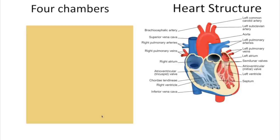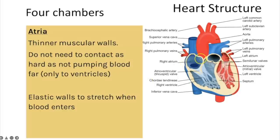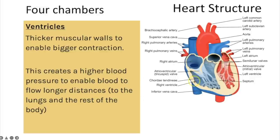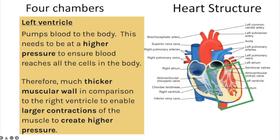Key heart structures: there are four chambers — two atria at the top and two ventricles at the bottom. The atria have thinner muscular walls and elastic walls because they only deliver blood from the atria into the ventricles and need to stretch when blood enters. The ventricles have much thicker muscular walls to contract with more force and pump blood at higher pressure to either the lungs or the body. The right ventricle has a comparatively thinner wall as it pumps at lower pressure to the lungs; the left ventricle has a much thicker wall to pump blood at high pressure around the body.